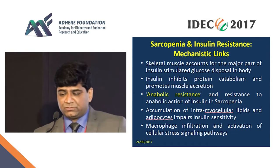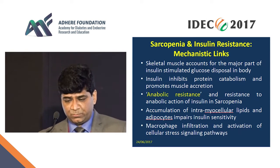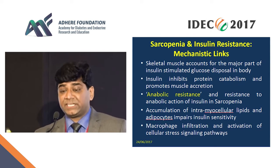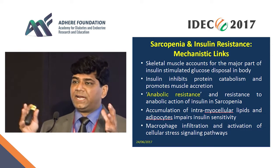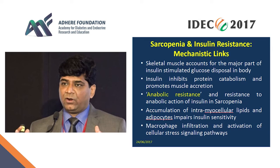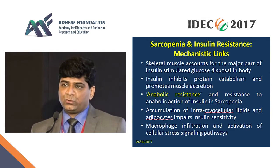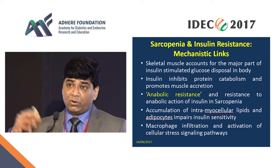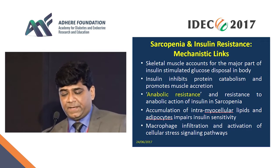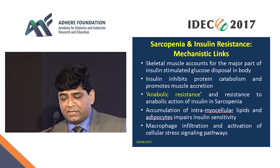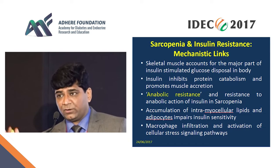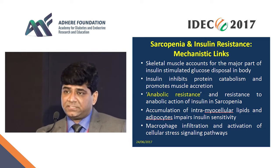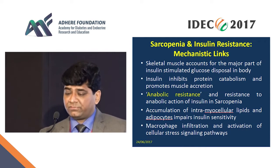Skeletal muscle accounts for the major part of insulin-stimulated glucose disposal. Insulin inhibits protein catabolism and promotes muscle accretion as well. In the presence of sarcopenia, there is anabolic resistance — even when amino acids are available, there is resistance to muscle accretion. Along with that, there is also resistance to the anabolic action of insulin. This is mainly caused by intracellular accumulation of lipids and ceramides, all of which impair muscle sensitivity. Macrophage infiltration and activation of cellular stress pathways also increase apoptosis of muscle cells.